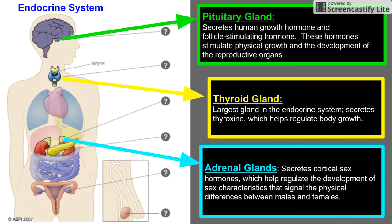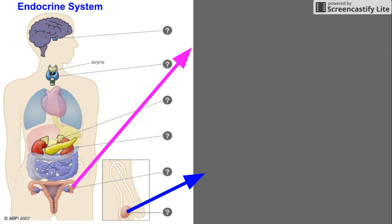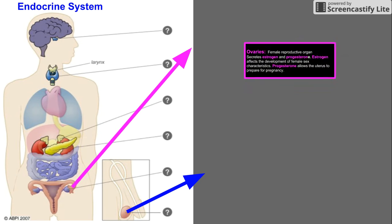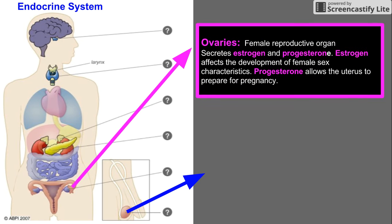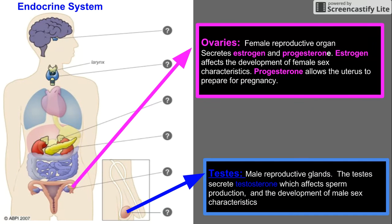Now let's take a look at the ovaries and the testes. The ovaries are the female reproductive organ. They secrete estrogen and progesterone. Estrogen affects the development of female sex characteristics, while progesterone allows the uterus to prepare for pregnancy.